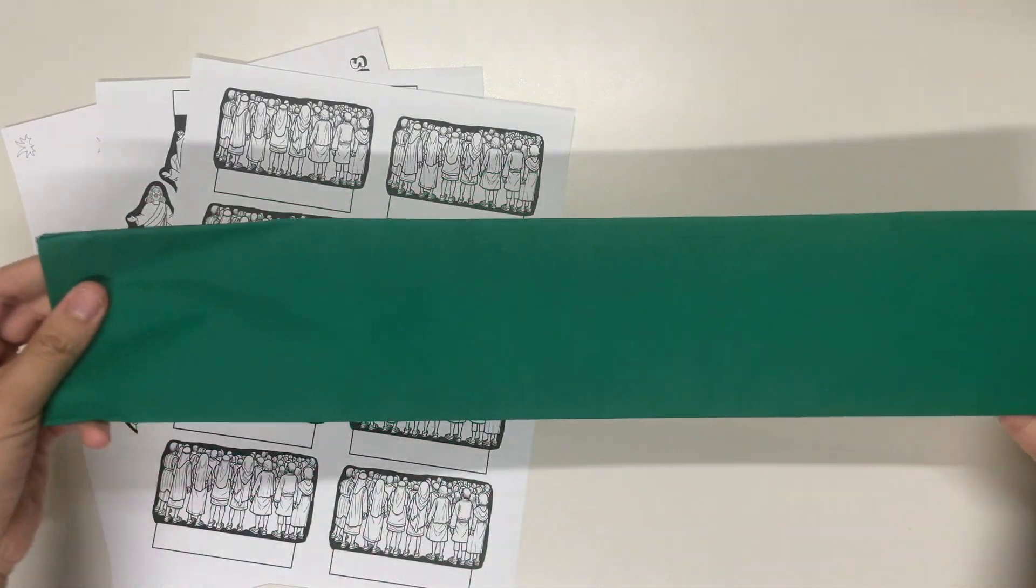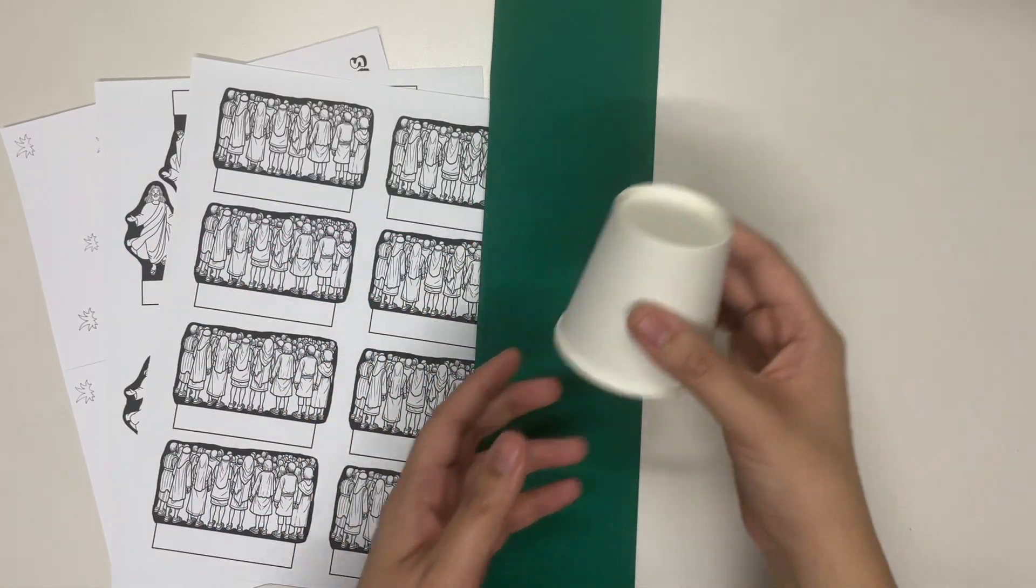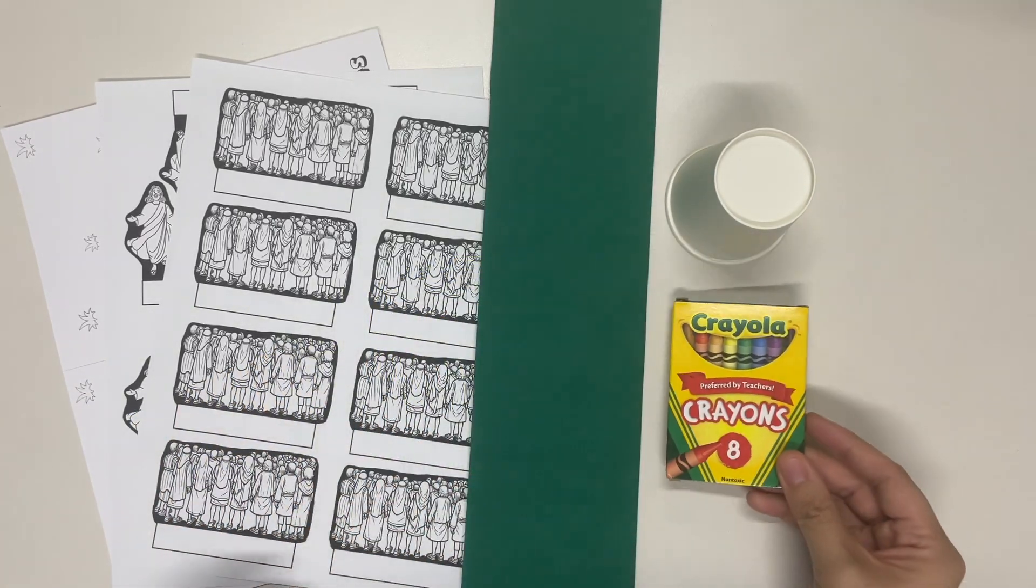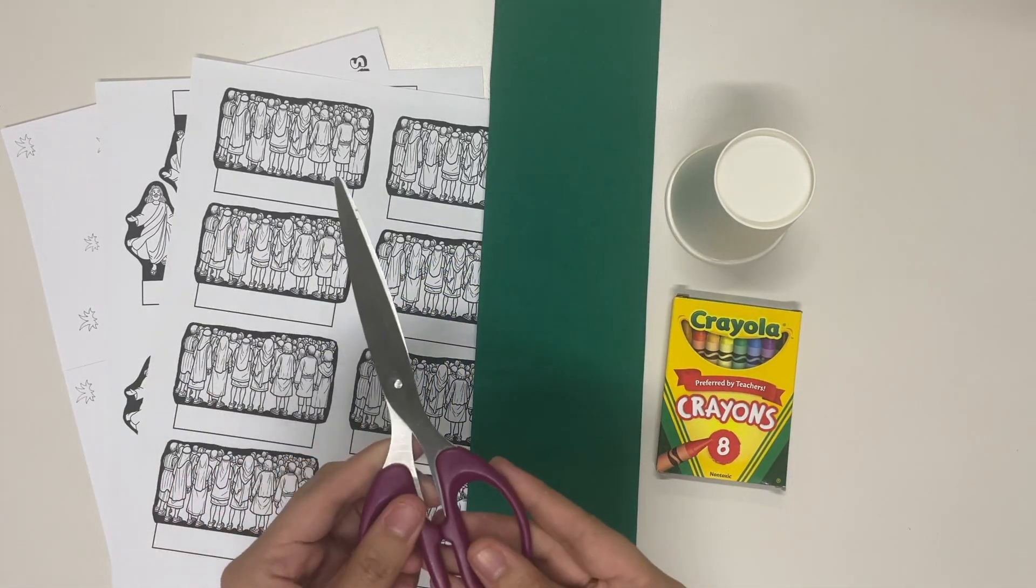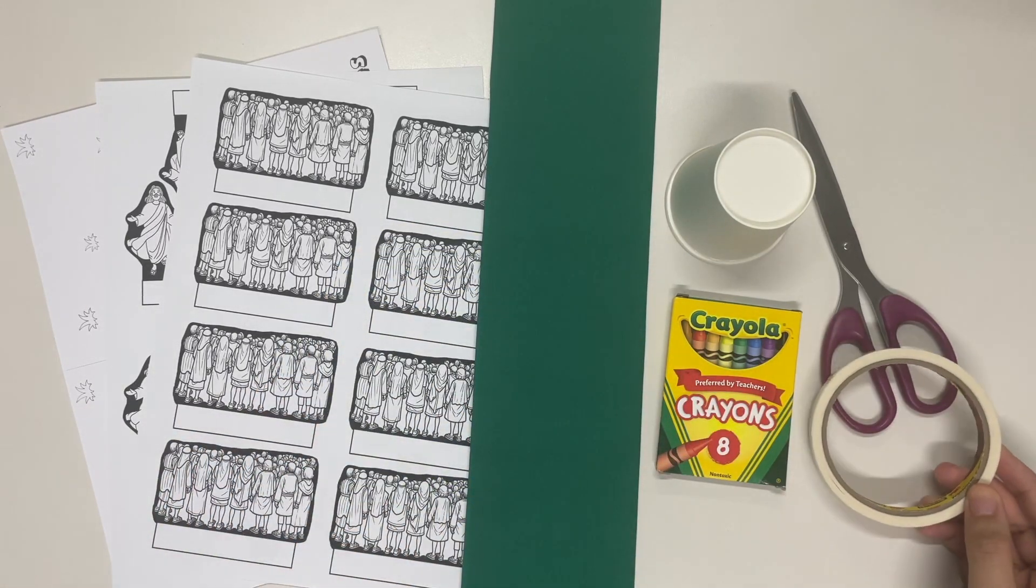We'll also need some crepe paper. So I have this one and a paper cup, crayons, scissors, and of course some double-sided tape.